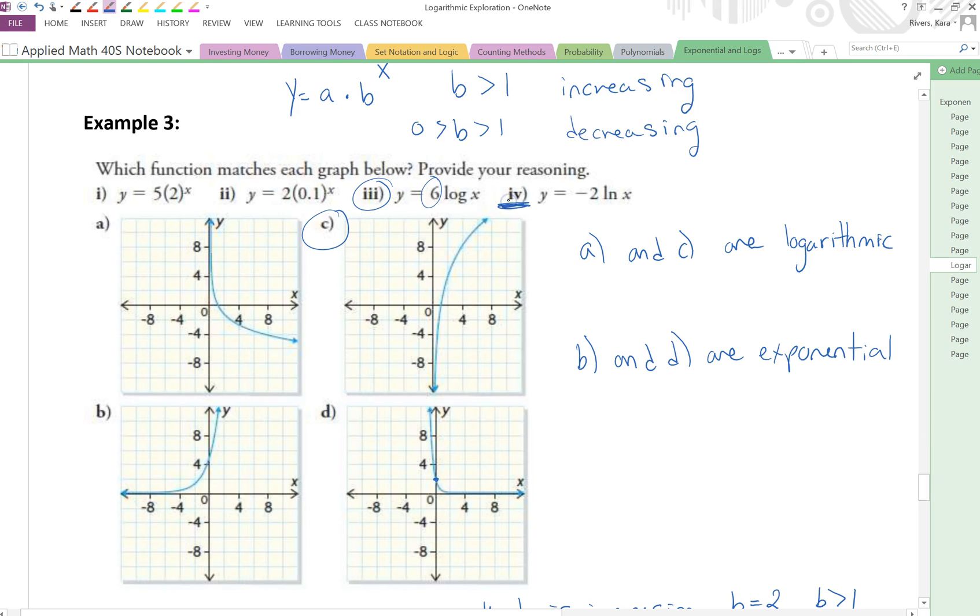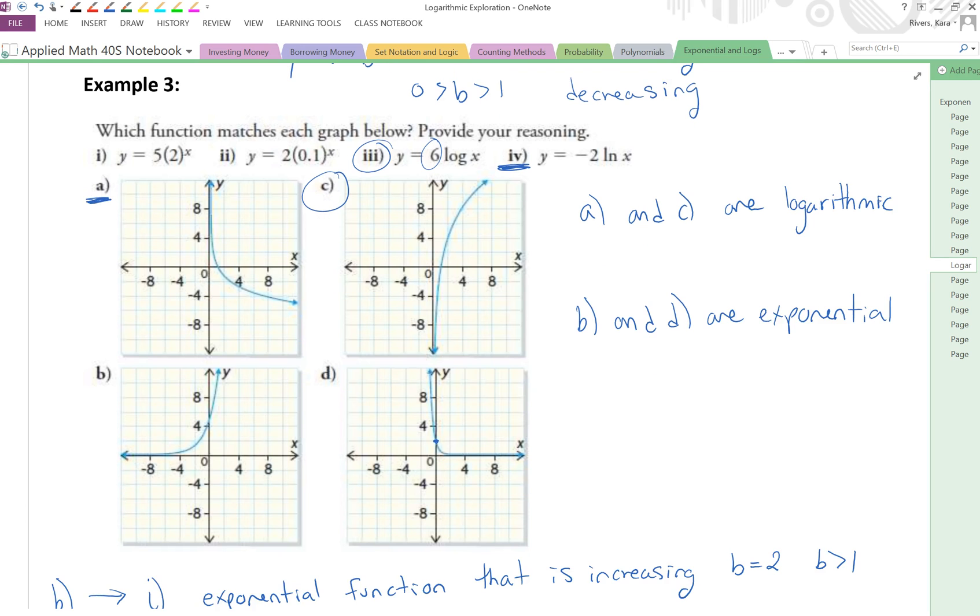Whereas, with equation 4, we can see that A value is negative. So equation 4 is going to match our decreasing graph, which is A. The fact that equation 3 is log base 10 and equation 4 is a natural log, doesn't change the behavior of the logarithmic functions. They both still have no y-intercept, and they still have an x-intercept of 1.